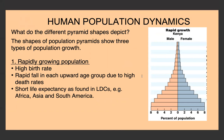There are three main types of population pyramid shapes. The first is a rapidly growing population: it has a very high birth rate, a rapid fall in each upward age group due to a high death rate, and quite a short life expectancy. Rapidly growing populations are usually found in LDCs, like many countries in Africa, Asia, and South America, where birth rates are high but so is the death rate due to limited access to healthcare.